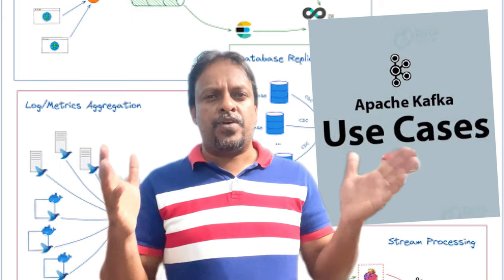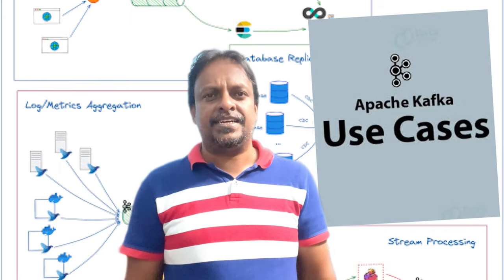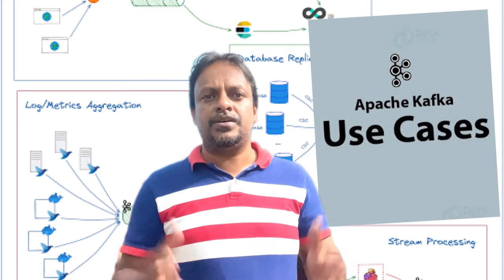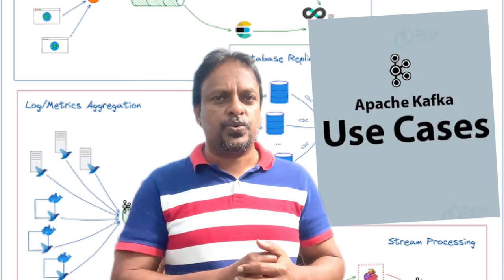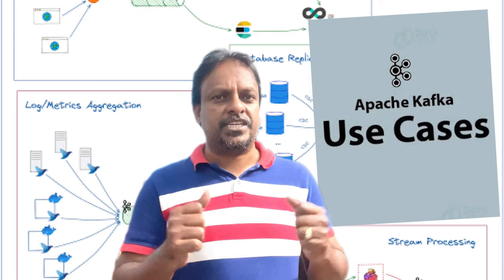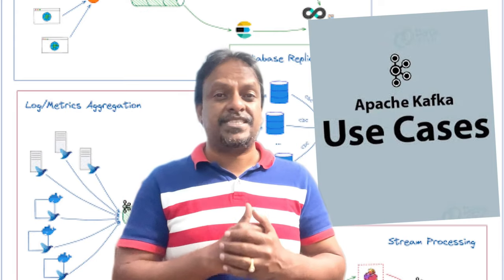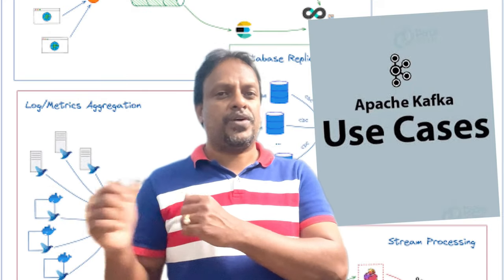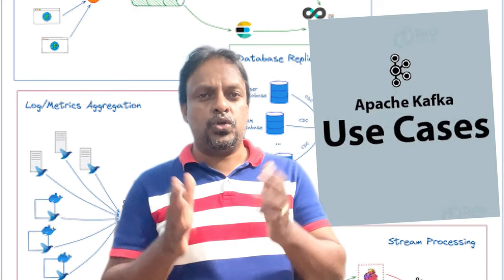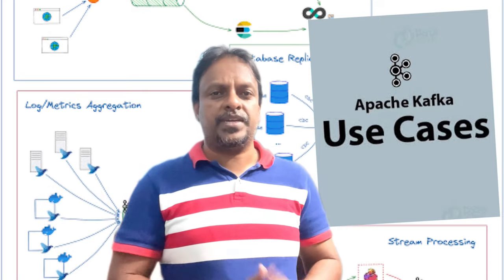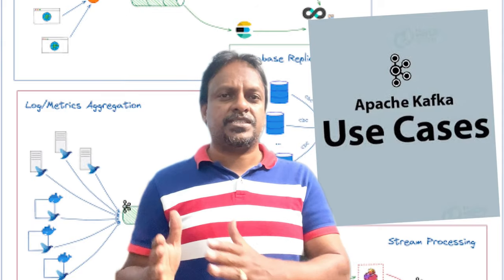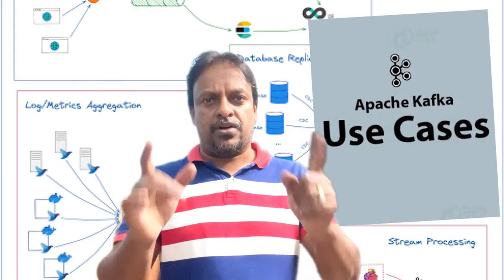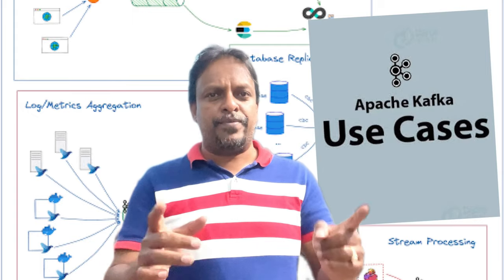The fourth one is web activity tracking. When you have a web application, different users are going to use it, and we can capture what activities they are doing and store that into our database through Kafka. It is pretty fast and can process huge amounts of data within seconds.